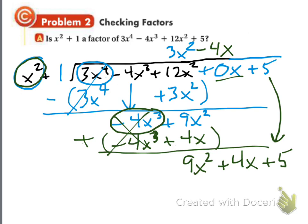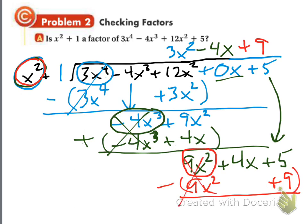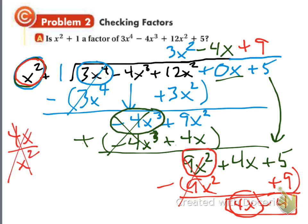9x squared divided by x squared — that's just 9. So 9 times x squared is 9x squared, and 9 times 1 is plus 9. Minus the whole thing. So I get 4x, and then 5 minus 9 is minus 4. Now we can't do any more division, because if I took 4x and tried to divide by x squared, that's no good. So we have to stop here. Was our remainder 0? No. So that means x squared plus 1 is not a factor, because the remainder equaled 4x minus 4 — it wasn't 0.